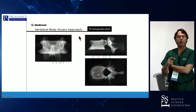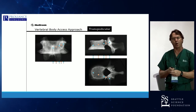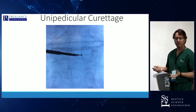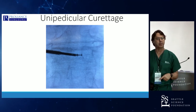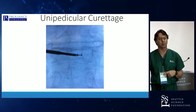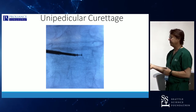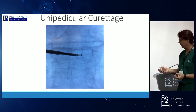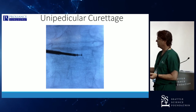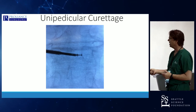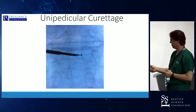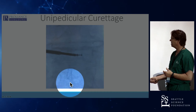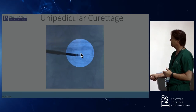Once you are on that trajectory, you have options. You can complete the procedure as a bipedicular procedure — do the same thing on the opposite side following trajectory each step — or you can accomplish treatment of the vertebral body from a unilateral position using the curette to cross over. The medial border of the pedicle is right there underneath the curette; we've crossed the midline from a unipedicular approach and reached the medial border of the pedicle.